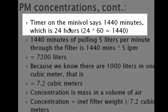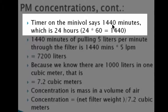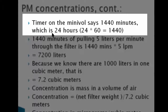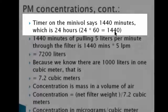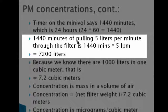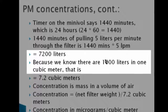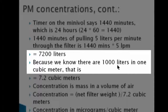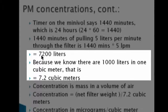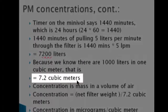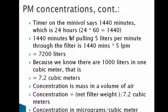The timer on the mini ball says it ran for 1,440 minutes — which is exactly 24 hours (24 times 60 = 1,440 minutes). So 1,440 minutes of pulling five liters per minute through the filter: multiply the two — the per-minute here cancels out the minutes here — and 1,440 times 5 is 7,200 liters. Since there are 1,000 liters in one cubic meter, 7,200 liters equals 7.2 cubic meters pulled through a mini ball, if it operates perfectly for 24 hours at exactly five liters per minute.